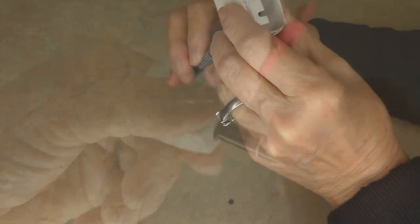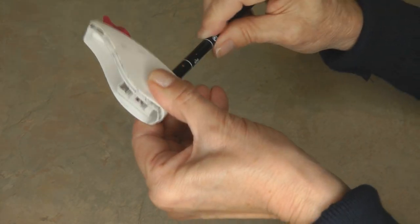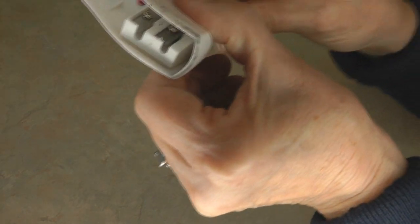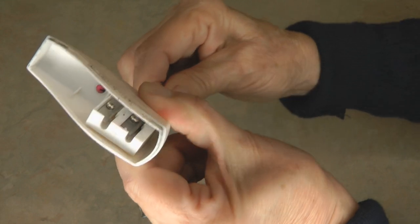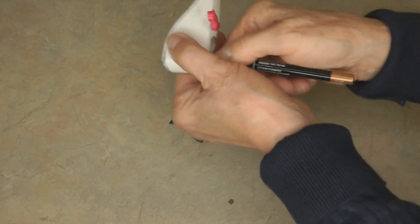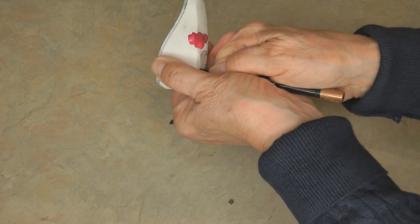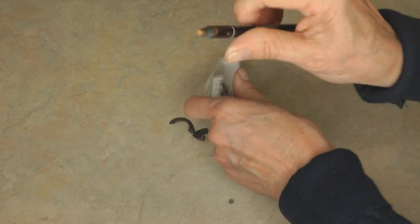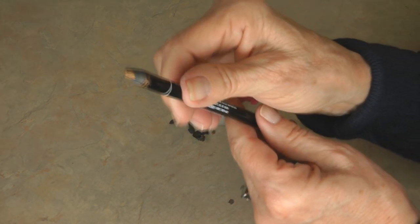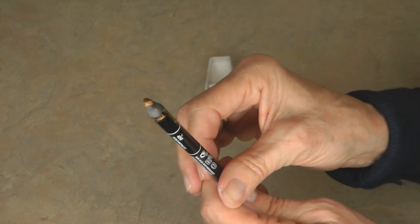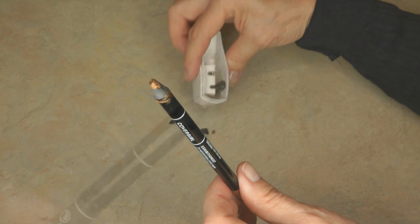You just have to remember the inner liner is much softer than pencil lead. So you want to twist the pencil around a few times, and sharpen it as straight as possible, because if you sharpen at an angle, the edge of the liner can break off. So twist it a few times and then pull it out as straight as possible.